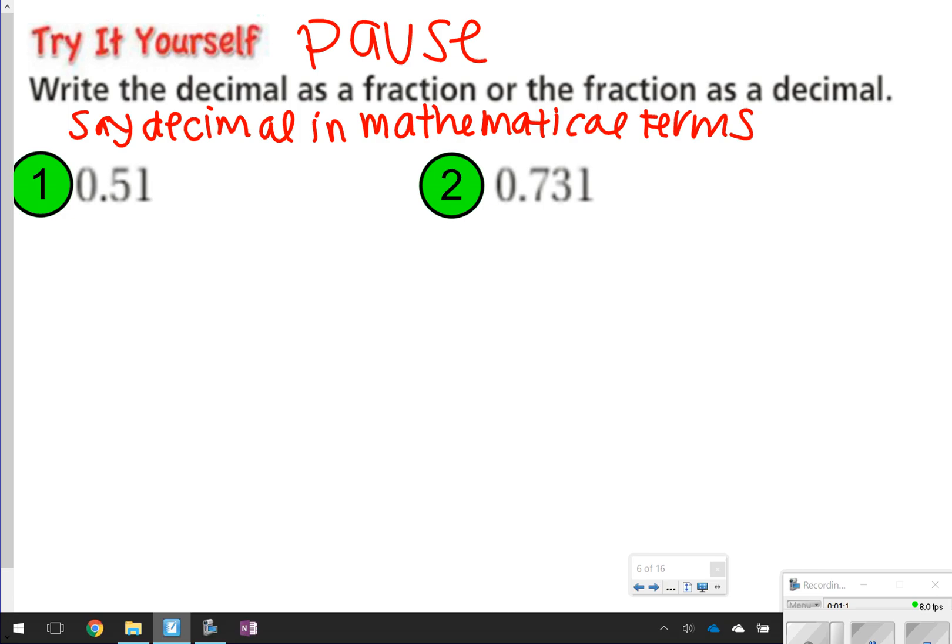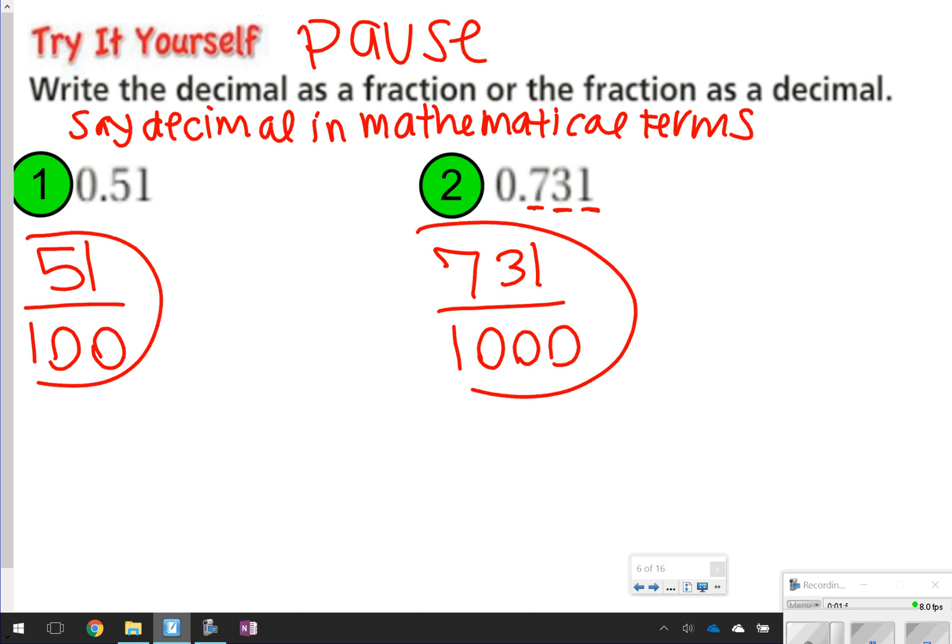Alright, so let's look at number 1. It says 0.51 as a formal mathematical term. I need to say 0 and 51 hundredths, so that means my fraction would be 51 over 100. Number 2 has a few more decimals. I know the 7 is in the tenths, 3 is in the hundredths, and 1 is in the thousandths, so it's going to be 731 thousandths, or 731 over a thousand. Both of these fractions can't be simplified because they don't have anything in common, so both of these fractions are in their simplest form.